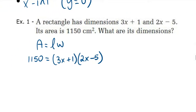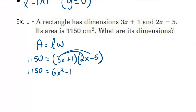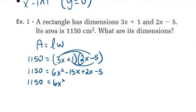We now have a quadratic equation. We're going to solve for x to find the dimensions — the length, the width, and the value of x. Let's expand the right side using the distributive property: 3x times 2x is 6x², 3x times negative 5 is minus 15x, 1 times 2x is 2x, and 1 times negative 5 is minus 5. Simplifying, we get 1150 equals 6x² minus 13x minus 5.